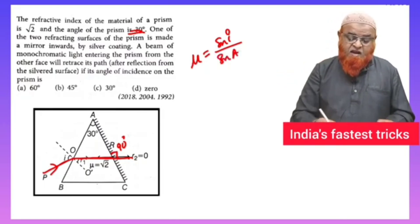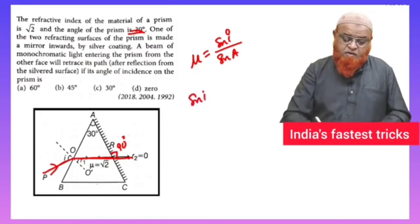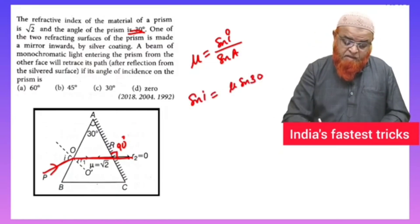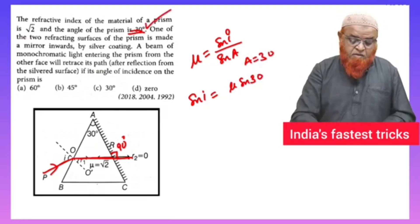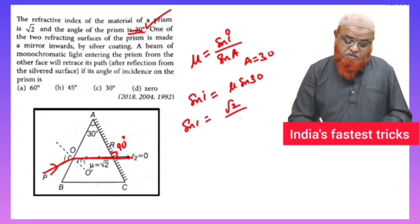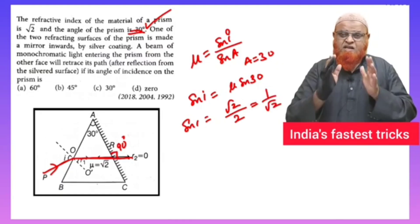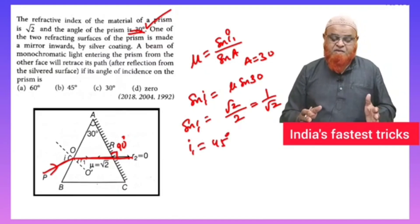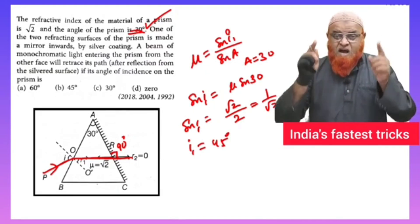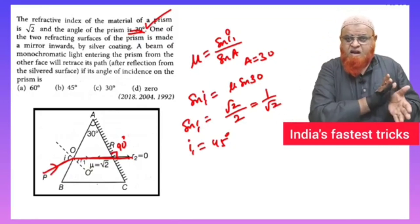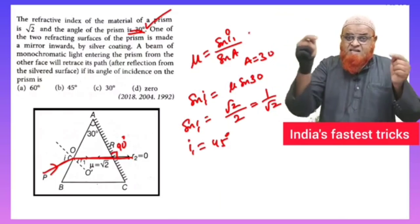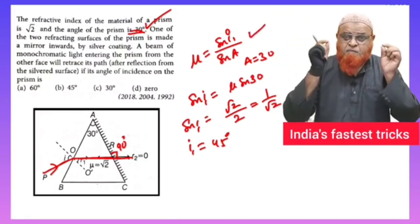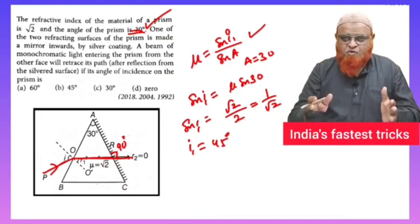Instead of writing mu = sin(i)/sin(r), you can directly write mu = sin(i)/sin(A), where A is the angle of the prism. So sin(i) = mu × sin(A). With A = 30° and mu = √2, we get sin(i) = √2 × sin(30°) = √2 × (1/2) = 1/√2. Therefore i = 45°. In a single step we get the answer.